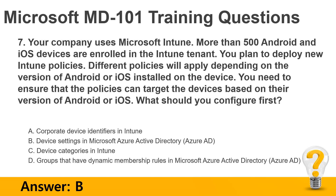A. Corporate device identifiers in Intune. B. Device settings in Microsoft Azure Active Directory (Azure AD). C. Device categories in Intune. D. Groups that have dynamic membership rules in Microsoft Azure Active Directory (Azure AD). Answer: B.